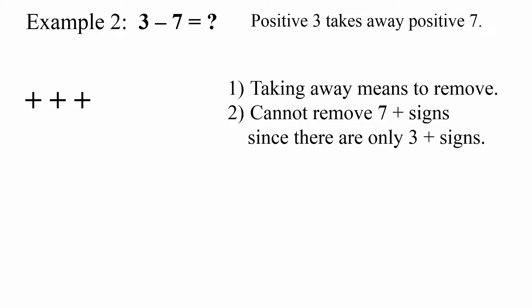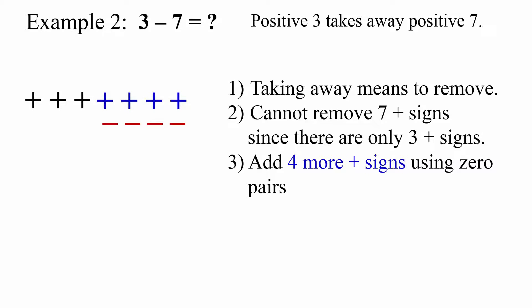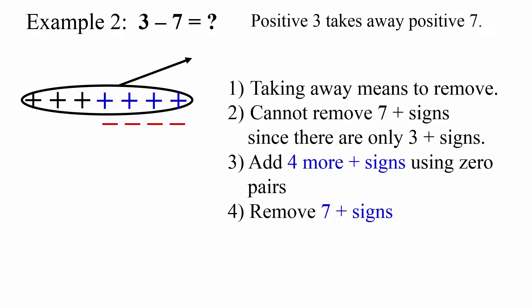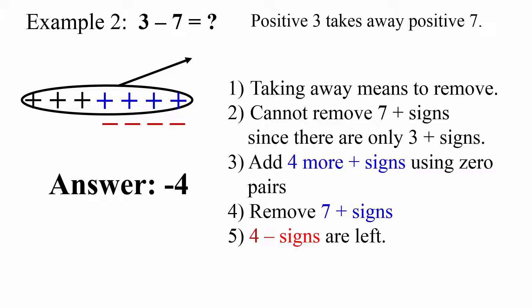To get 7 positive, I add 4 more positive signs using zero pairs. Then I remove 7 positive. I am left with 4 negative signs. The answer is negative 4.